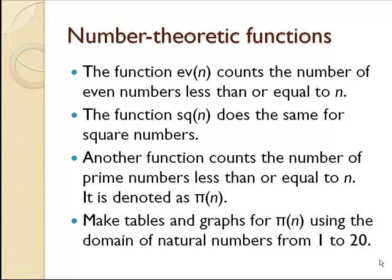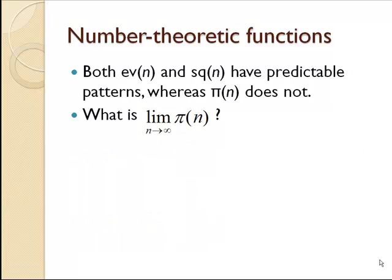With ev(n) and sq(n), those functions have predictable patterns. Ev(n) bumps up a value every two numbers. Sq(n) goes up every time you hit a perfect square, and there's a predictable pattern. However, pi(n) — the counting of those primes — doesn't really have a predictable pattern.